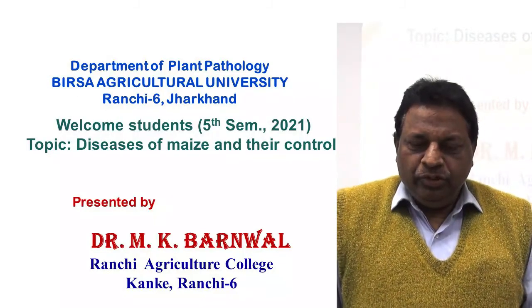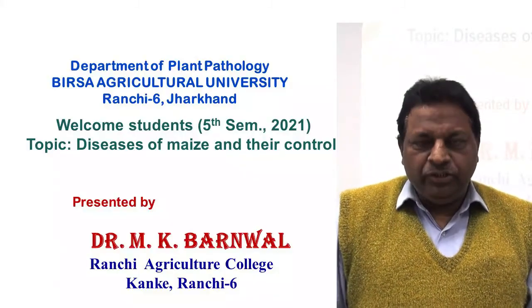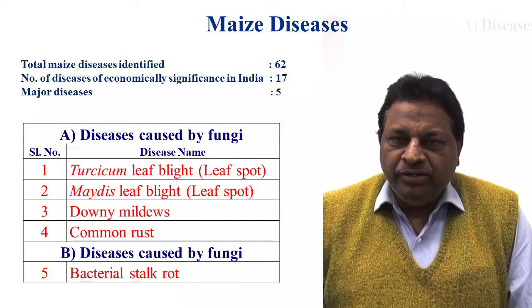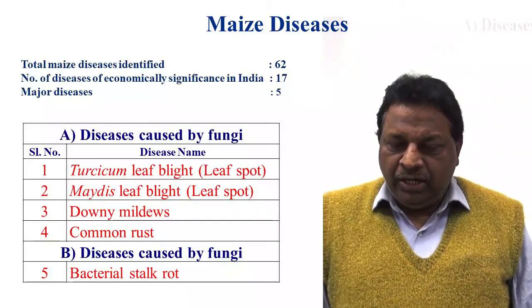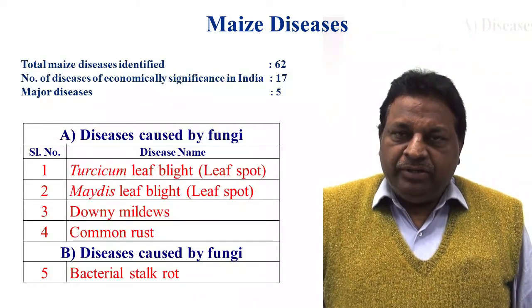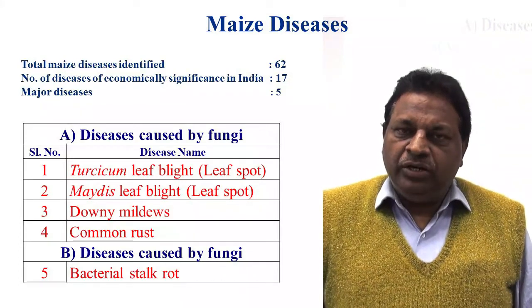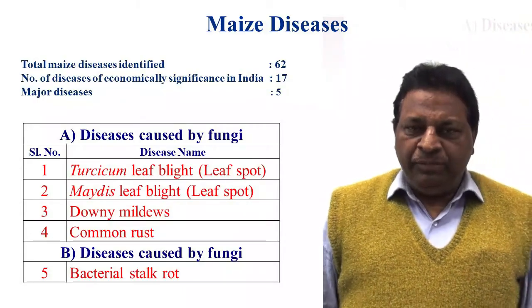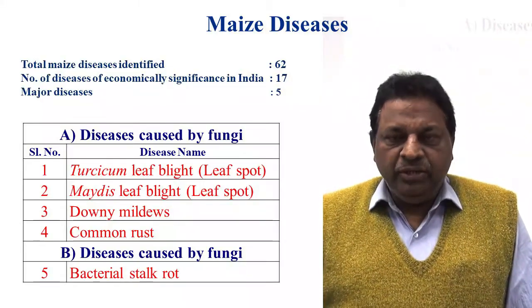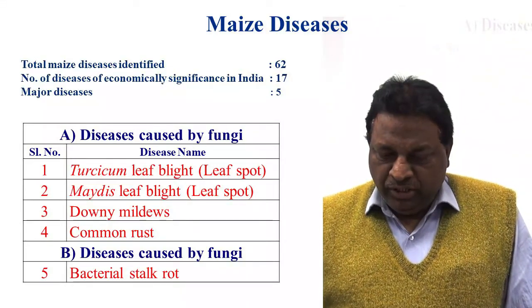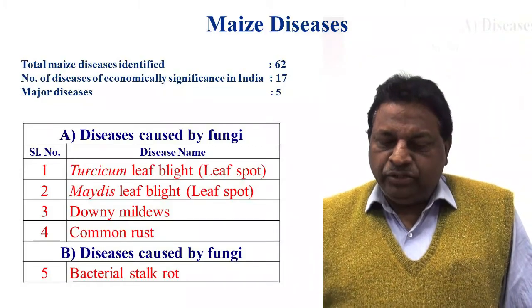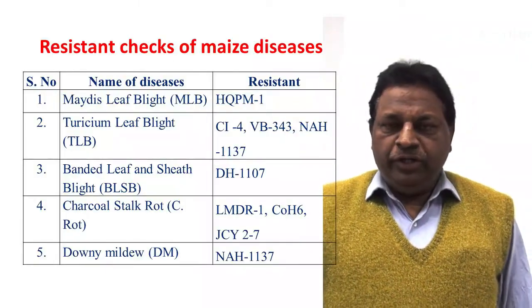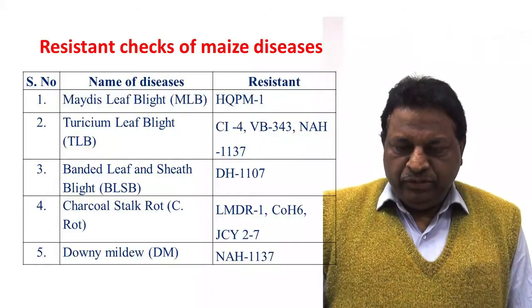Welcome students. Today I am going to deliver a lecture on diseases of maize. Actually there are 62 diseases reported in maize, out of which 17 diseases have economic importance. But there are five major diseases which are very common all over the major maize-growing areas in India. These five diseases are Turcicum leaf blight, Maydis leaf blight, downy mildew, common rust, and bacterial stalk rot. These are the diseases responsible for decreasing the yield of maize.